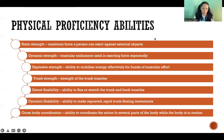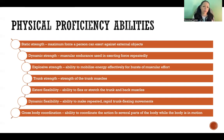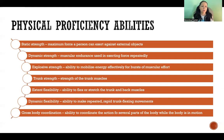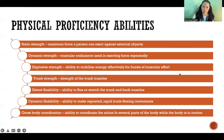Then we have the category of physical proficiency abilities. Overall, we are looking at strength and flexibility — the maximum force a person can exert, the strength of the trunk muscles, the ability to make repeated rapid trunk flexing movements. We are looking at the abilities of the actual physical plant outside of just the control system — the muscles, bones, and joints, and how we are able to coordinate and move those.